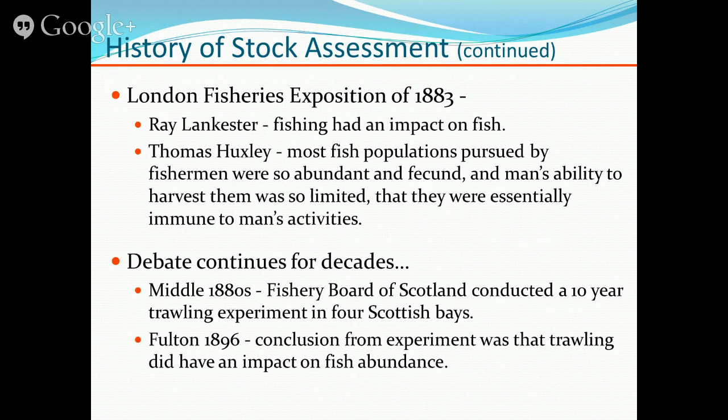It finally came to a head at a fishing expedition in London in 1883. There were two schools of thought. Dr. Lancaster believed man could have an impact on fish stocks and actually reduce numbers of fishes. But the famous scientist Thomas Huxley was of the mindset that the ocean was so vast that man couldn't possibly impact stock abundance — basically that the ocean was immune to mankind's impact. That debate continued into the late 19th century.